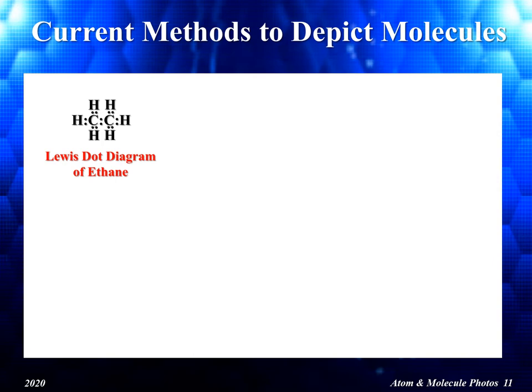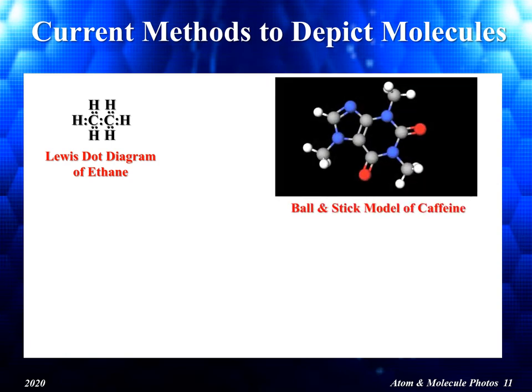These diagrams are examples of how current scientists visualize various molecules. The drawing of ethane on the top left is known as a Lewis dot diagram, first developed by chemist Gilbert N. Lewis in 1916, and these diagrams are still used today. The drawing of ethane shows the sharing of electrons between the carbon and hydrogen atoms. Another way to visualize molecules is with ball and stick models, where the balls represent the atoms and the sticks show the bonds. The photo on the top right shows a ball and stick model of caffeine, where red balls represent oxygen atoms, blue balls show nitrogen atoms, grey balls show carbon atoms, and white represents hydrogen atoms. Two sticks between atoms show the double bonds.